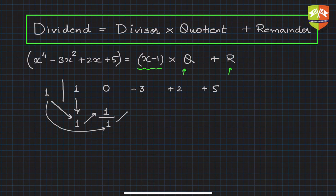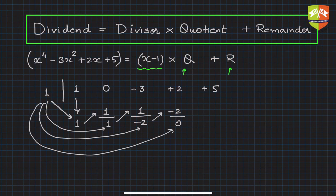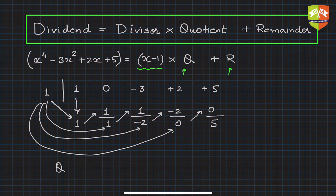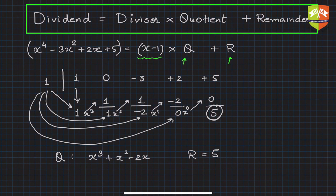Add the column to get 1 again. Multiply by 1 to get 1, write it, add the column to get -2. Multiply -2 by 1 to get -2, add to get 0. Then 1 times 0 is 0, add to get 5. The remainder is the last term: r = 5. The quotient is x³ + x² - 2x, reading off the other coefficients.